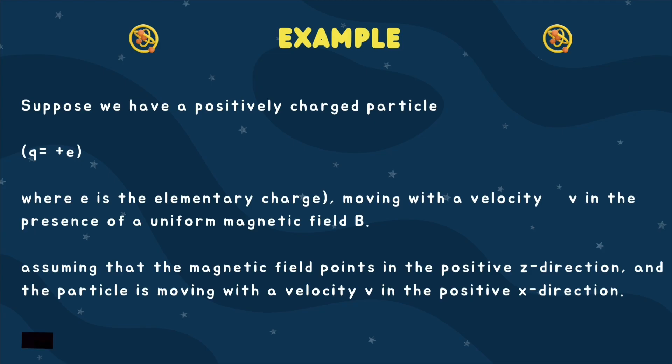Suppose we have a positively charged particle, such as a proton Q equals plus e, where e is the elementary charge, moving with the velocity Vec V in the presence of a uniform magnetic field Vec B. Let's say that the magnetic field points in the positive Z direction, and the particle is moving with the velocity Vec V in the positive X direction.